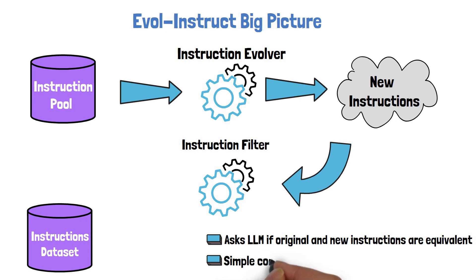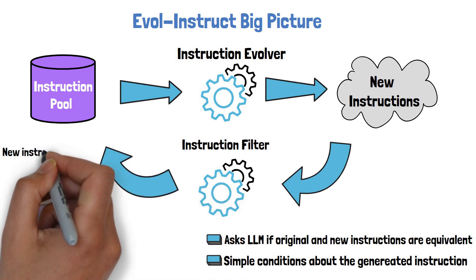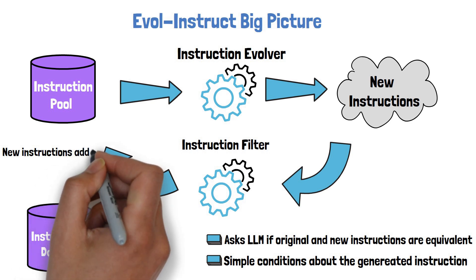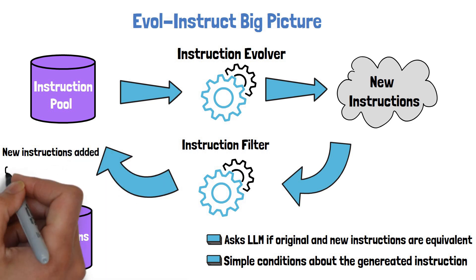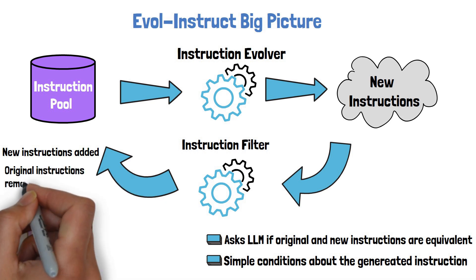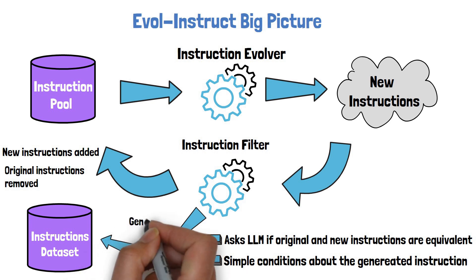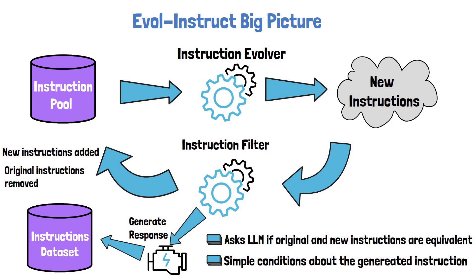The Instruction Filter also has a few simple conditions to filter out generated instructions, such as the length of the instruction and whether it contains specific words or characters that imply it is of bad quality. The instructions that pass are then added to the instruction pool in order to go through this pipeline themselves and further create more instructions. Original instructions that were transformed successfully are removed from the pool, while instructions that fail to transform are kept with the hope to succeed in the next iteration. Passed instructions also go via an LLM to generate a response, and then, together with the response, are added to the final set of valid instructions.